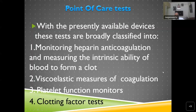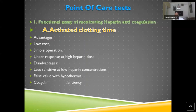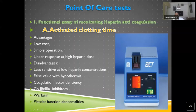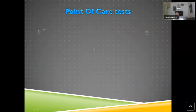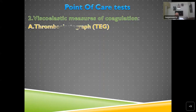The activated clotting time (ACT) is the most common functional assay for monitoring heparin anticoagulation — very familiar to those doing cardiopulmonary bypass surgery. It is low cost with simple operation. The goal is to raise ACT to two or three times baseline before cannulation in cardiopulmonary bypass by giving heparin. The high-dose thrombin time is another functional assay of heparin anticoagulation.